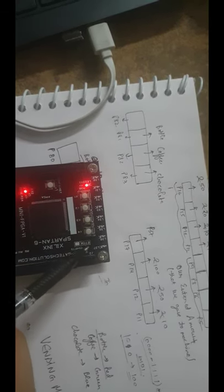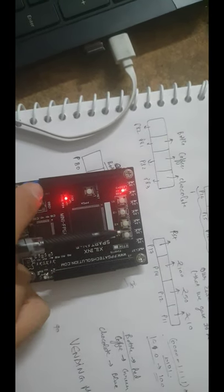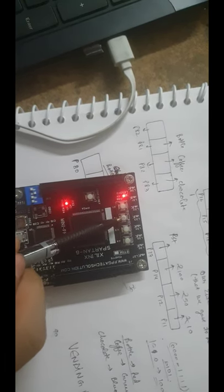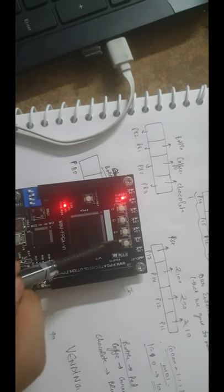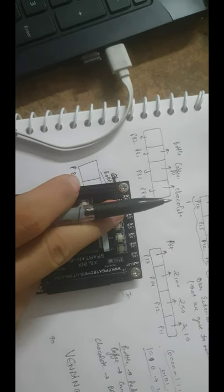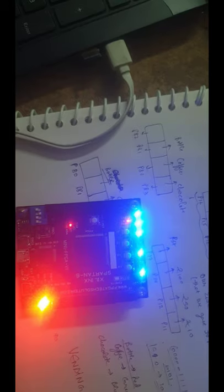Now I am going to show a particular example where I want a bottle but I gave a 100 rupees note. This switch is for 100 rupees, this switch is for 50 rupees, and this switch is for 20 rupees. I have reset it using the reset switch, and now I am going to enter 100 rupees. The switch for bottle is the P81 switch.